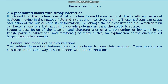Second: the generalized model with strong interaction. The nucleus consists of a core formed by nucleons of filled shells and external nucleons moving in the core field and interacting intensively with it. These nucleons can cause oscillation and deformation of the core, changing the self-consistent field which may become non-spherical, acquiring a quadrupole moment and the ability to rotate. Applications include description of the location and characteristics of a large number of low-lying levels — single-particle, vibrational, and rotational — and explanation of large observed quadrupole moments. Third: generalized models of pair correlations, in which the residual interaction between external nucleons is also taken into account.